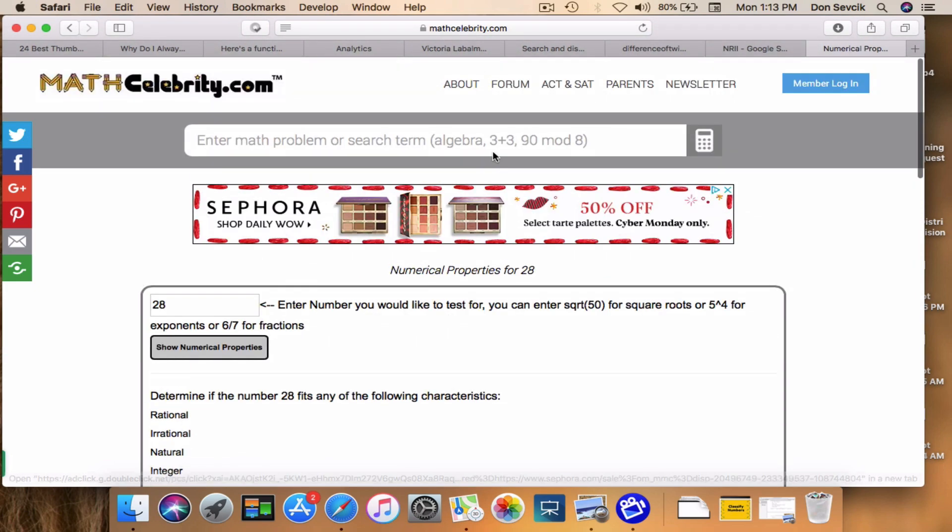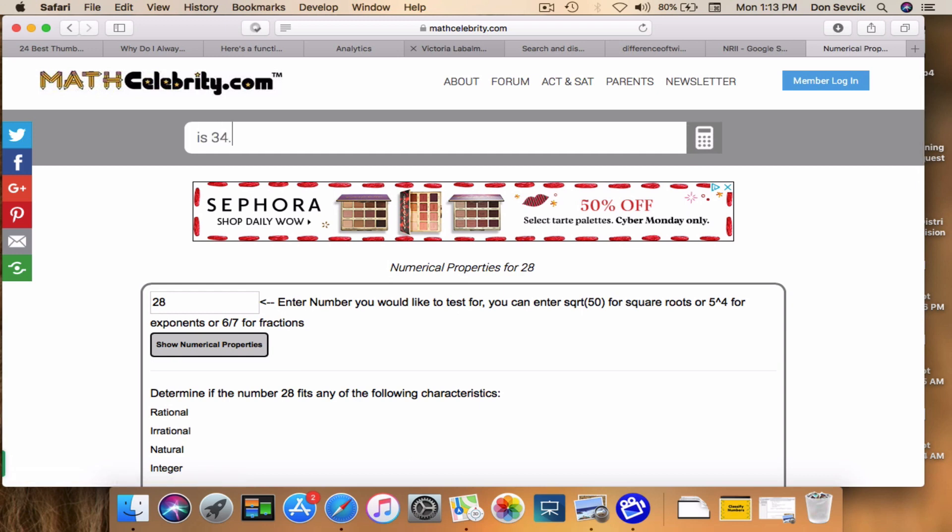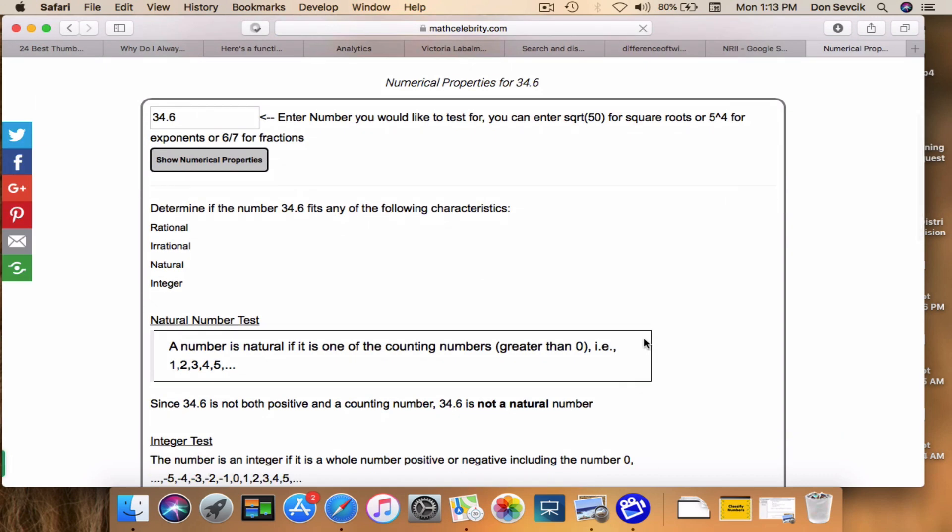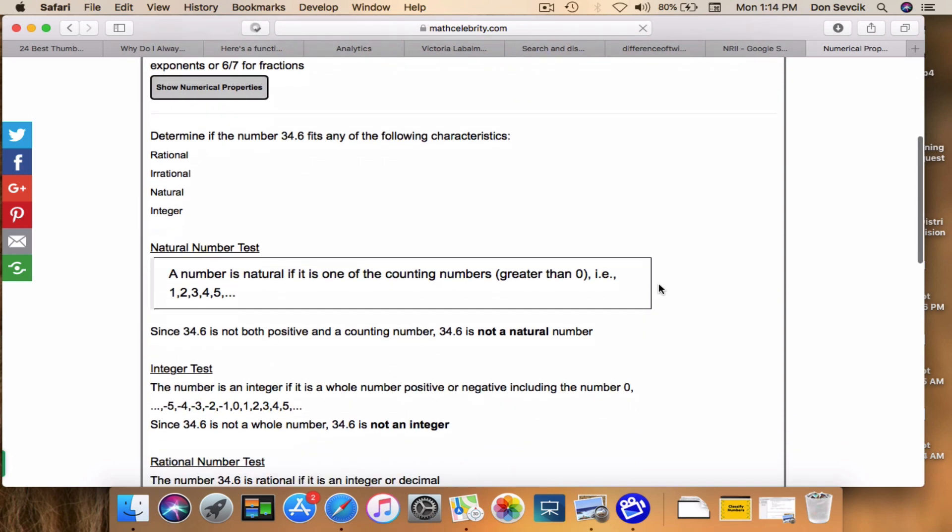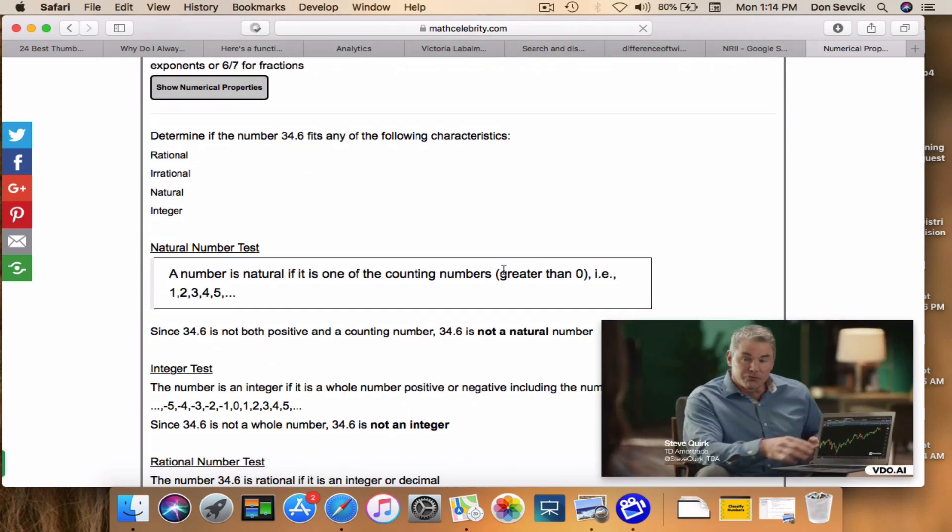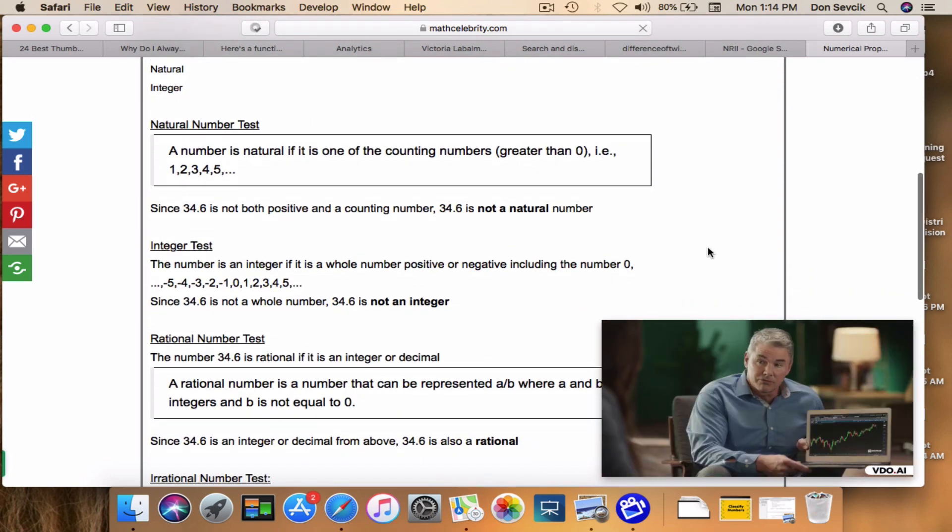Let's do one more. We'll say: Is 34.6 a rational number? Again, the calculator routes us to the classification of numbers test. It's going to run through here.